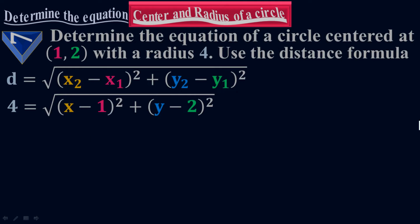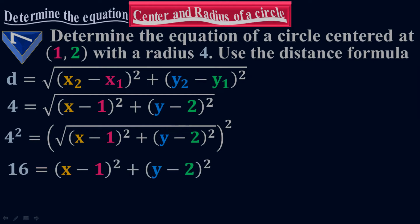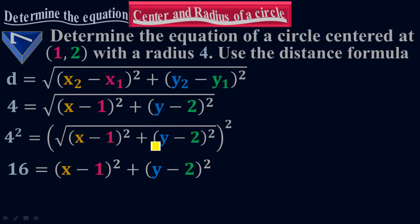Now I'm going to take square on both sides to have 4 squared equals to under root of x minus 1 to the whole square plus y minus 2 to the whole square, all to the power 2. This root will cancel with the 2, because root equals to 1 over 2, and 1 over 2 times 2 — the 2 will cancel, leaving only 1. Therefore, this root will cancel and you will be left only with the inside part.